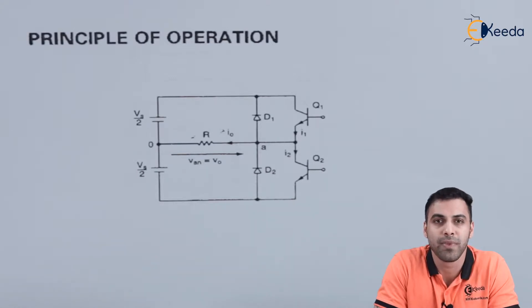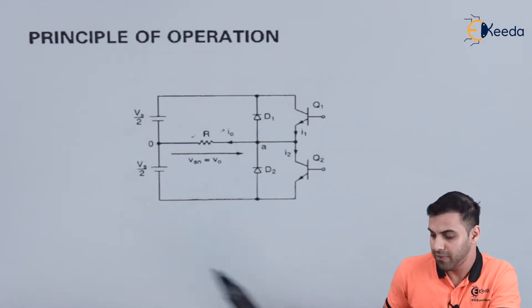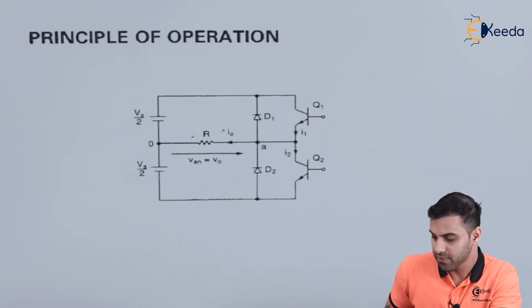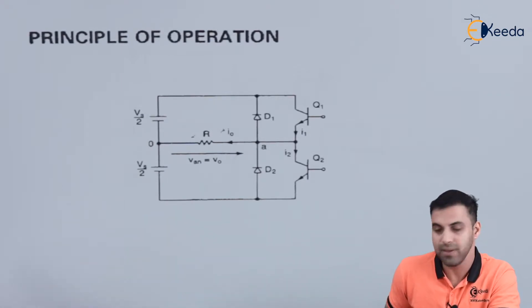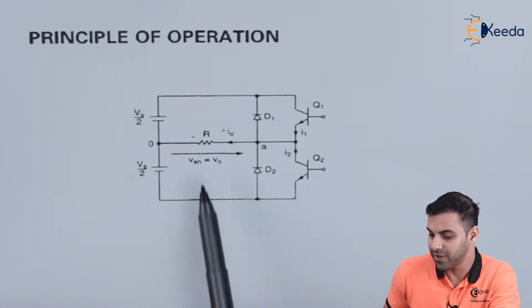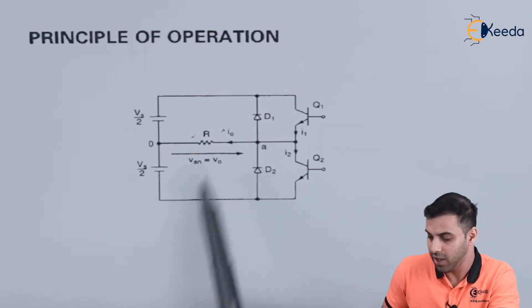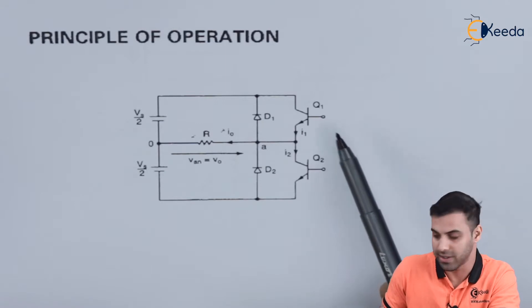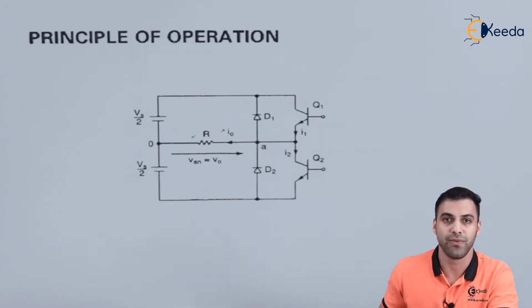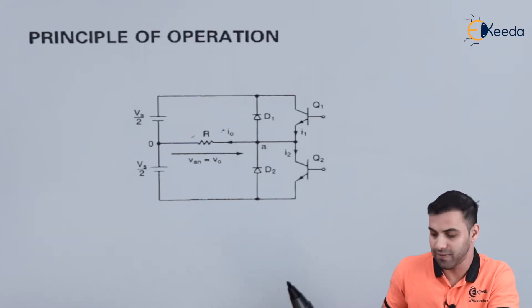Let's talk about how it operates and the principle of operation. Here I have used two voltage sources of value Vs/2 and Vs/2, where Vs is the source voltage. I have connected a resistance R, two diodes D1 and D2, and two transistors Q1 and Q2.